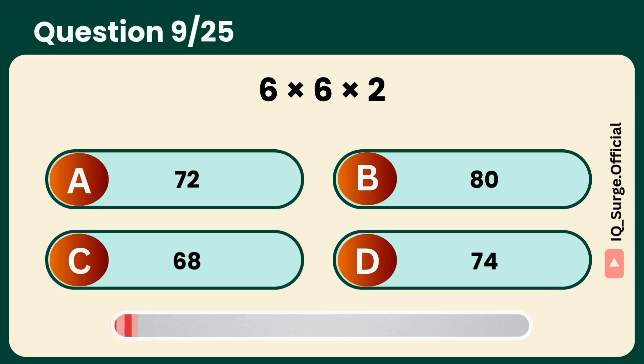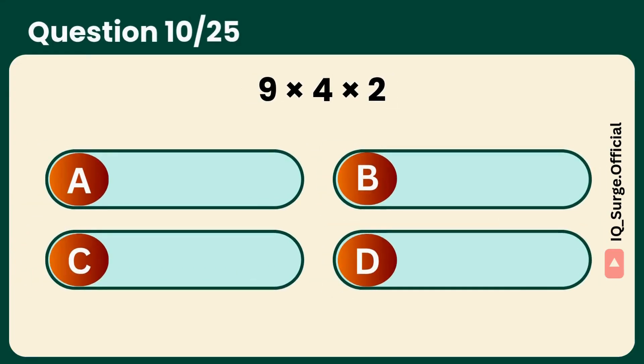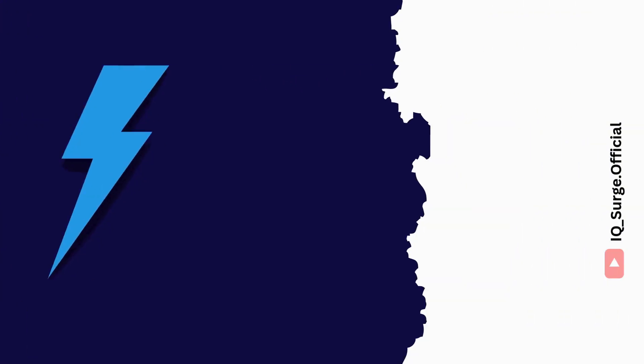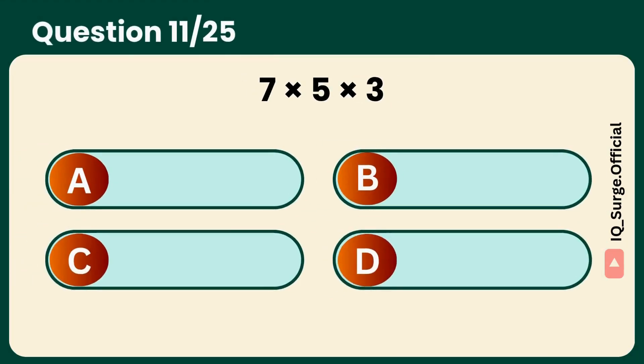What is 6 times 6 times 2? Two sixes, easy win. Answer: A, 72. What is 9 times 4 times 2? Fast math, go. Answer: C, 72.